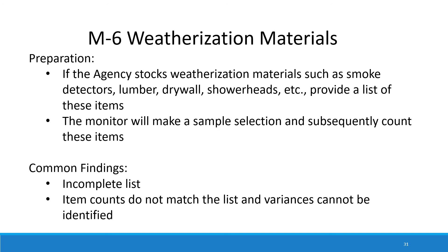Then we move on to weatherization materials. If we're doing a remote monitoring, we are unable to perform this test, but if we are able to come on site, we would like to see a list of any weatherization materials that you stock — whether that be smoke detectors, lumber, drywall, shower heads, etc. Please provide us with a list of these materials and your current count, and when we're on site, we'll do a random count of probably five or six items. Areas of concern include an incomplete list, item counts that don't match the list provided, and variances that can't be identified.